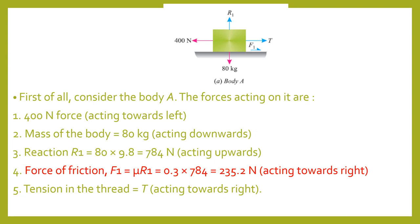One more force is the tension in the thread, which acts towards the right. A simple concept to remember: a thread can only pull a body, never push it. So there is always a pull force in the case of a thread, chain, or string. These are the five forces acting on body A.